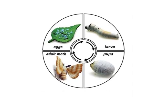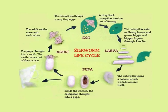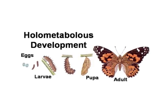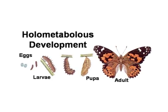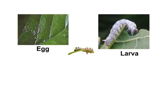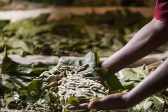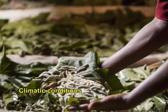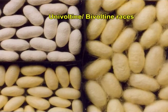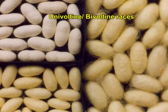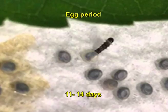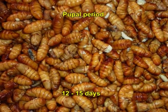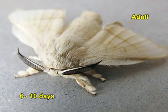We should have knowledge on correct identification of life stages and life cycle of mulberry silkworm. Mulberry silkworm is a holometabolous insect and passes through 4 morphologically different stages in its life cycle: egg, larvae, pupae, and adult. The duration of each stage varies according to the race and according to the climatic conditions and the quality of food given. In univoltine and bivoltine races, egg period ranges from 11 to 14 days after break of diapause, larval period ranges from 24 to 26 days, pupal period ranges from 12 to 15 days, and the adult lifespan is 6 to 10 days.